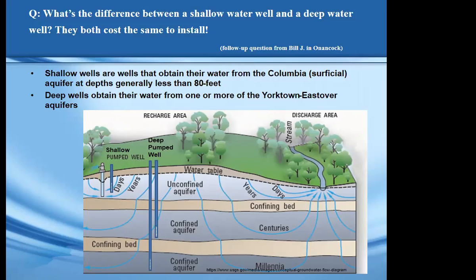A deep pump well is going to draw from a confined aquifer. In this case the top confined aquifer would be the upper Yorktown, and then the next one down would be the middle Yorktown. The time it takes for the water to get to the well, as previously described, would be on the order of centuries.